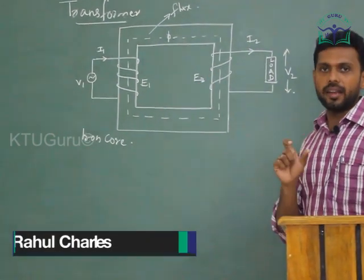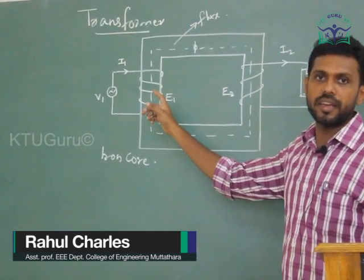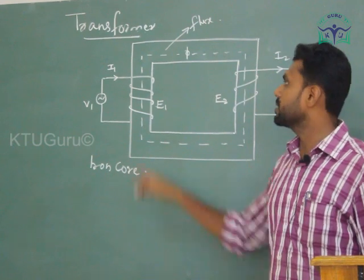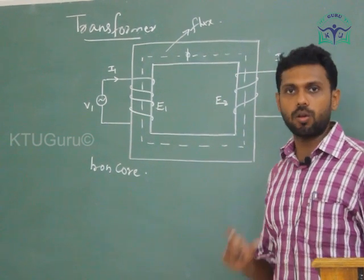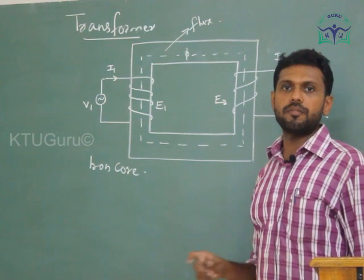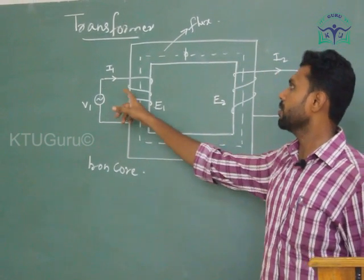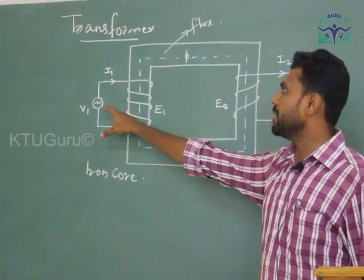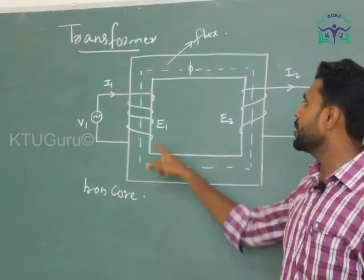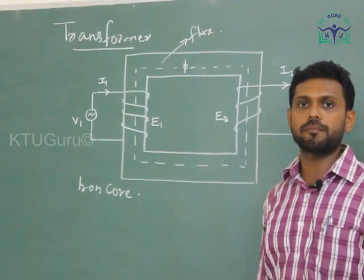This is a simple diagram of a transformer. Here there are two windings — primary winding and secondary winding — which are wound on a transformer core. An alternating voltage V1 is supplied at the primary. Whenever the voltage V1 is applied across the primary, a self-induced EMF E1 is induced in the primary winding.